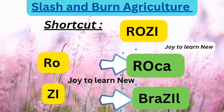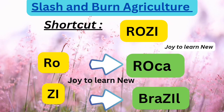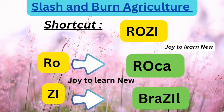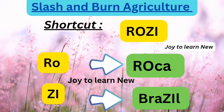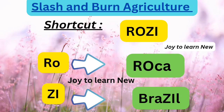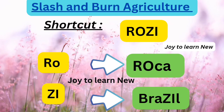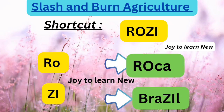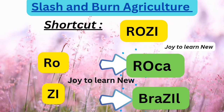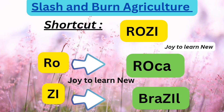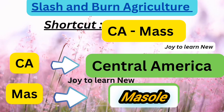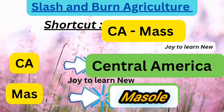The next shortcut is 'Rosy' or you can use 'Rob' — either works. RO stands for Roka, and B stands for Brazil. So Roka is the name of slash and burn agriculture in Brazil.